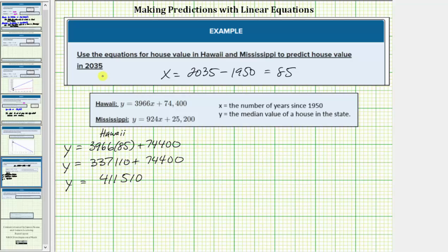So this tells us in 2035, the predicted median home value in Hawaii is $411,510.